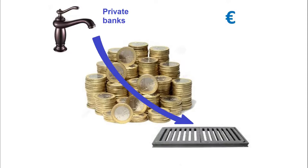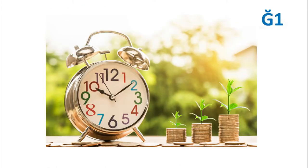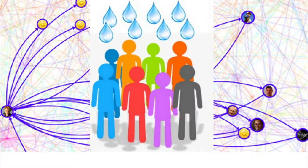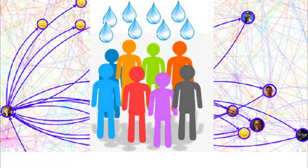The debt money was created from nothing and returns to nothing. As a result, a large part of the money supply is due to be destroyed when its time is up, and collectively we are forced to perpetually resort to credit — including governments. The monetary creation of the Juné is very different: it is spontaneous, daily, free, and evenly distributed among the members. Each member sees about 10 Junés appear on their account every day — this daily amount is called the Universal Dividend, or UD.